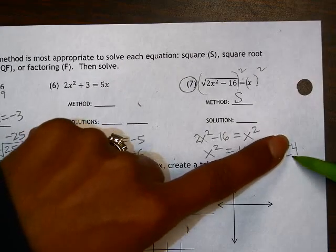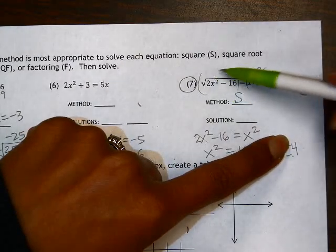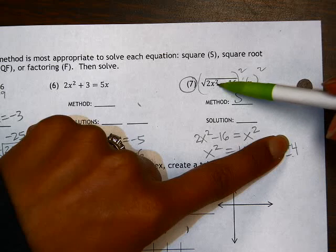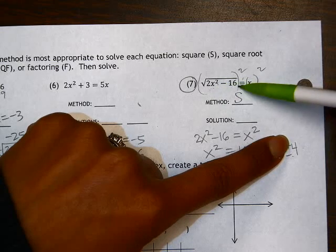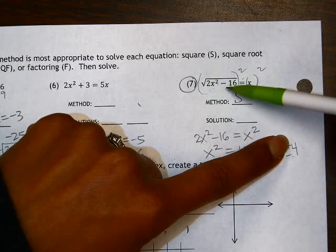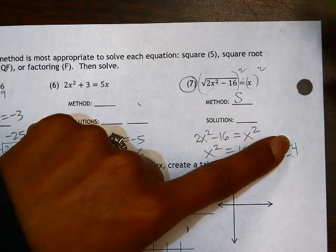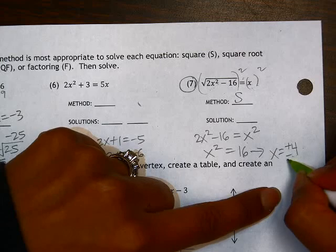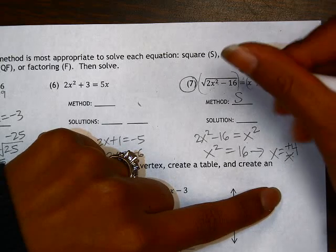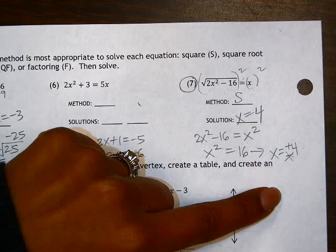If I plug in negative 4, I get the same answer on the left side. Negative 4 squared is 16. Times 2 is 32. Minus 16 is 16. Square root of 16 is 4, but we plugged in an x value of negative 4. So our answer of negative 4 is not valid. So it's only x equals positive 4.